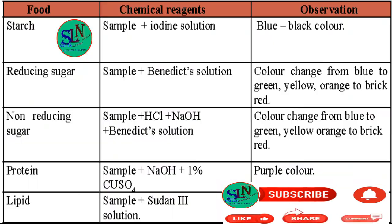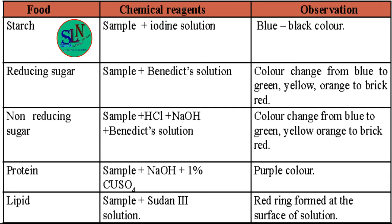In order to identify the food substances present in our sample, we use chemical reagents to observe specific results during practicals. Let's go through the chemical reagents used in food tests, from starch through to lipid.